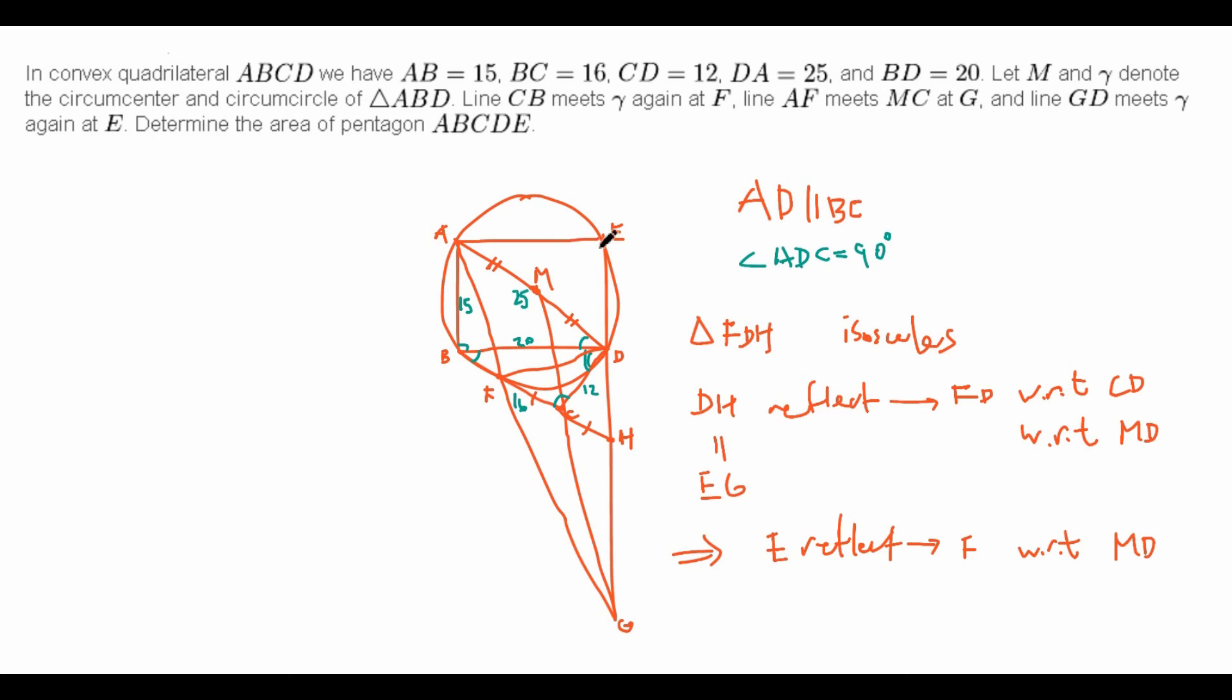So, E is the reflection of F with respect to MD. So, what this actually means is that, well, since BFDA is an isosceles trapezoid, we know that angle AFD is also 90 degrees, and the fact that FD is equal to 15, and AF is equal to 20, and since E is the reflection of F about AD, we know that ED is 15, and EA is 20. So, in fact, ABDE turns out to be rectangle.